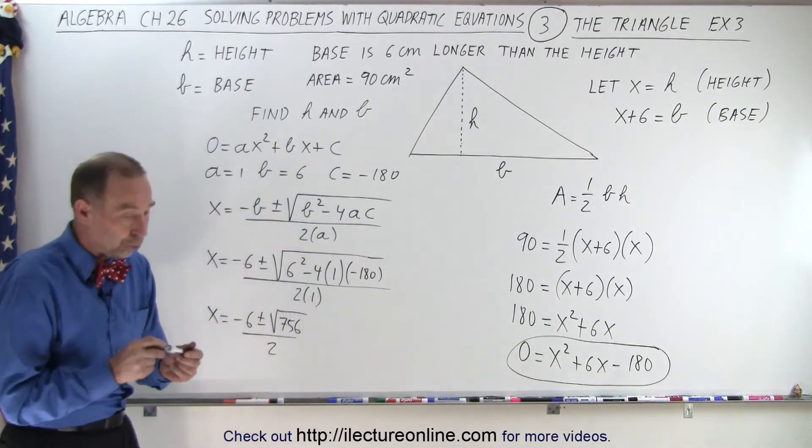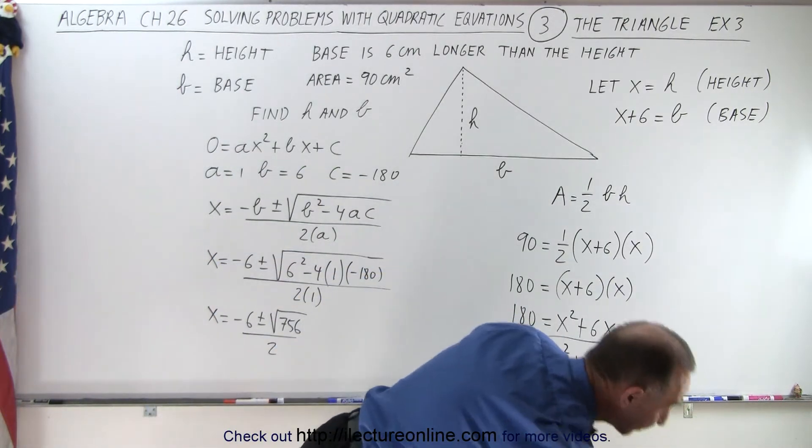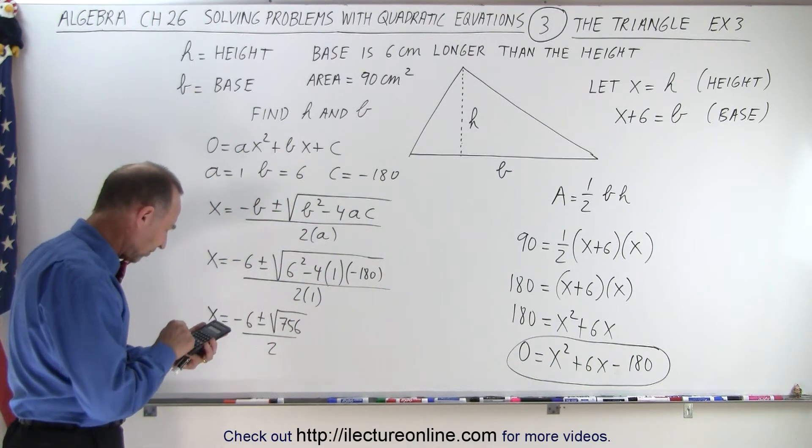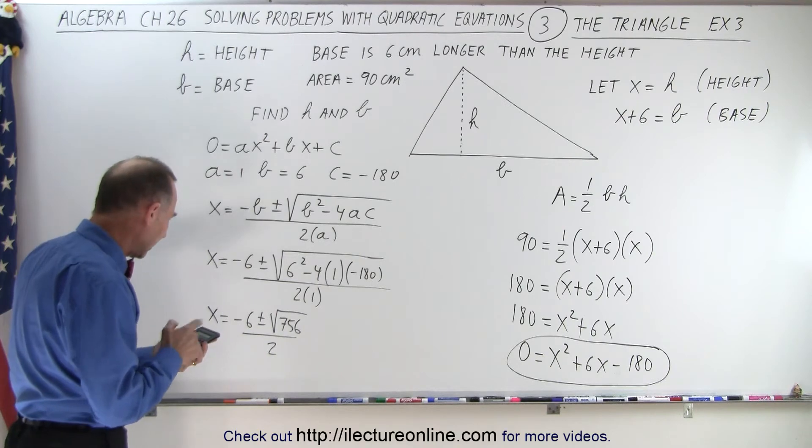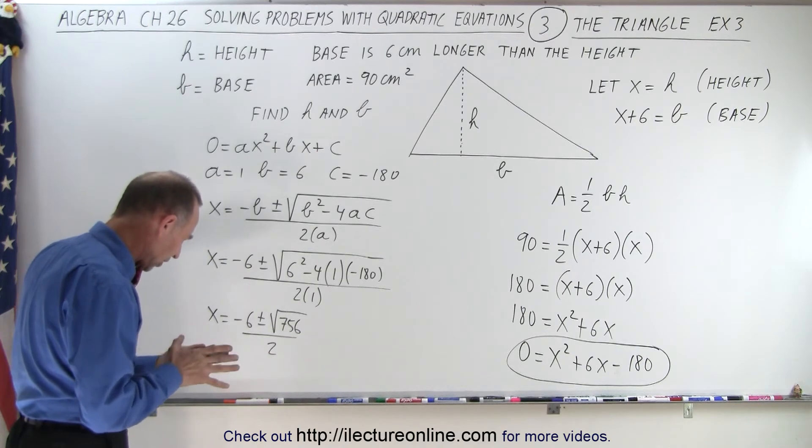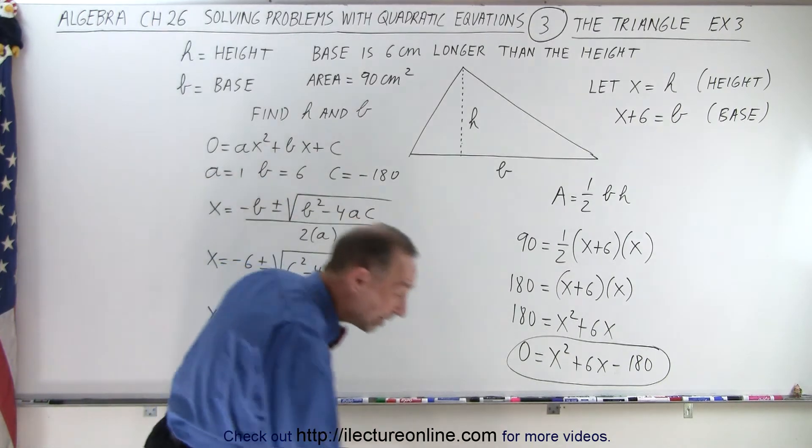First, let's try the plus. We have 756, take the square root of that, subtract 6 from that, and then divide by 2, which equals 10.75.